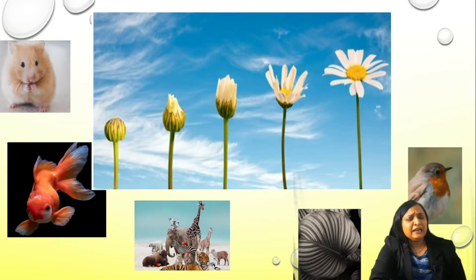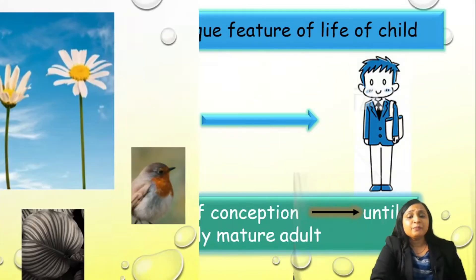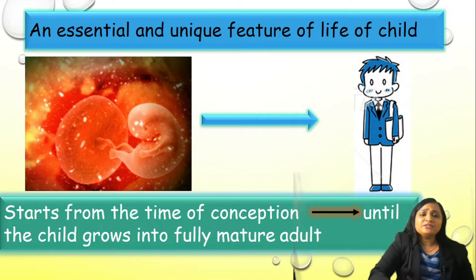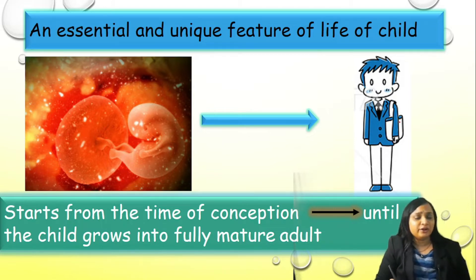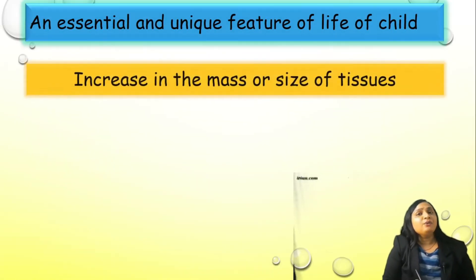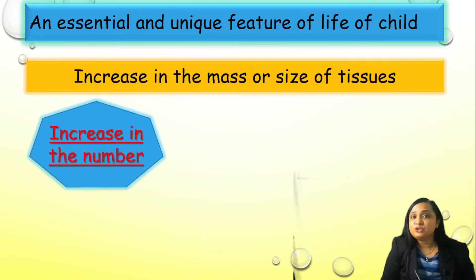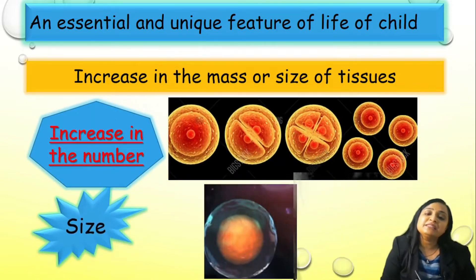Look around yourself. Anything which is alive — bird, animal, insect, plants — the hallmark of that life is growth. If they are growing, it means they are alive. So this is also an essential and unique feature of the life of a child. It starts from the time of conception and it continues till the child becomes a fully mature adult. The process of growth happens by two ways: either there will be increase in the number of the cell, or there will be increase in the size of the cell.